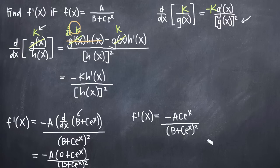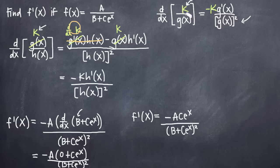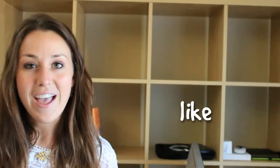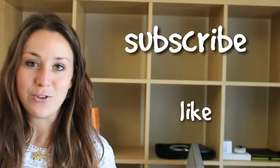And that's it — that's our final answer. This is the derivative f prime of x of our original function f of x. We found this derivative using the reciprocal rule formula adapted to account for any constant k in the numerator, instead of being limited to a value of 1. I hope you found that video helpful. If you did, like this video and subscribe to be notified of future videos.